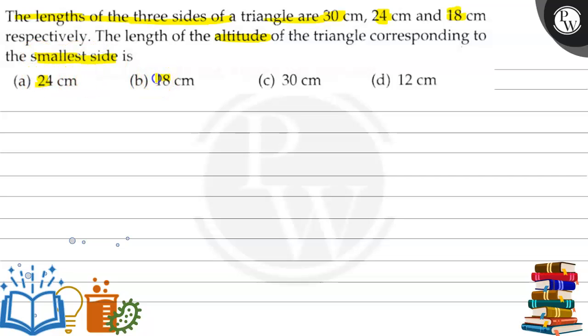Find the length of the altitude of the triangle corresponding to the smallest side. Options are: (a) 24 cm, (b) 18 cm, (c) 30 cm, and (d) 12 cm.